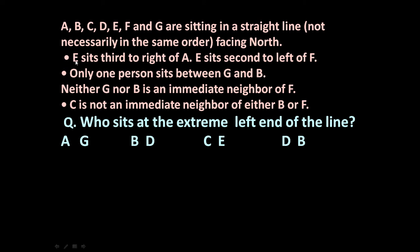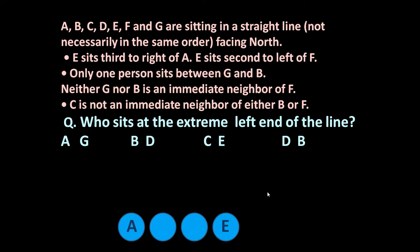The first statement is: E sits third to the right of A. This is A — this is the right side of A and this is the left side. E sits third to the right: 1, 2, 3.